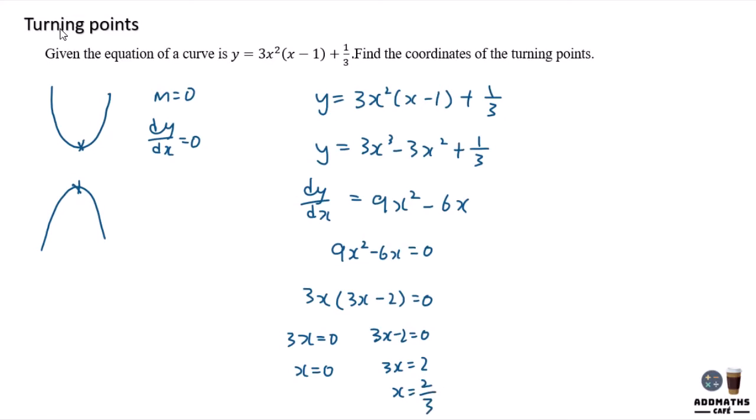So you have two x-coordinates; now you need to find y. First, x equals zero: y equals 3 times 0² times (0 minus 1) plus 1/3. Since this is 0, everything here will be 0, equals 1/3.